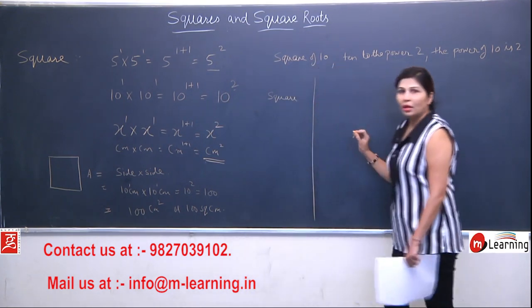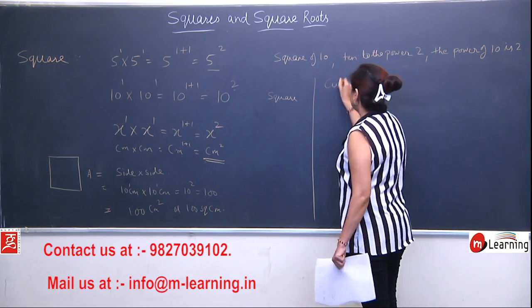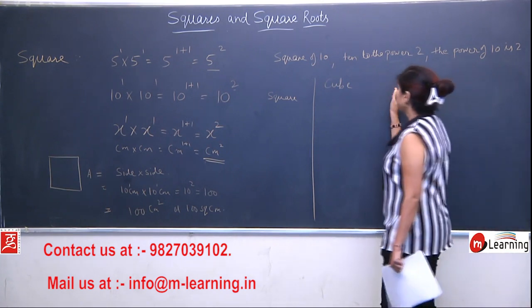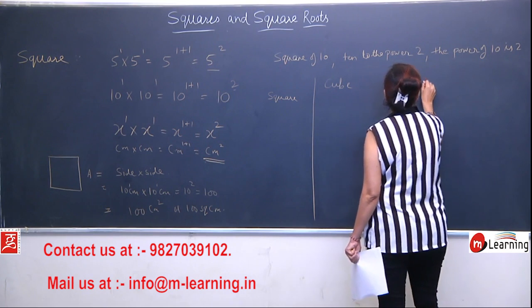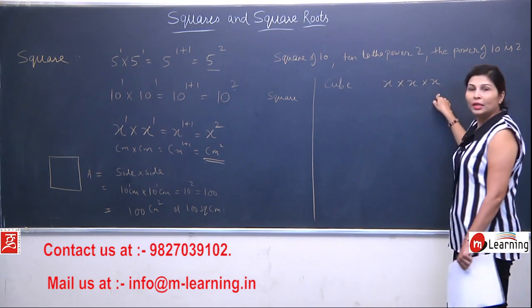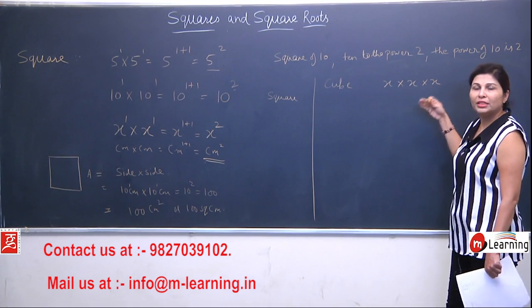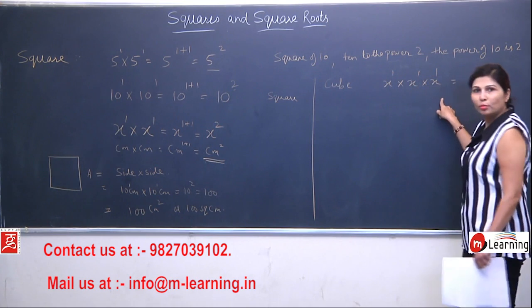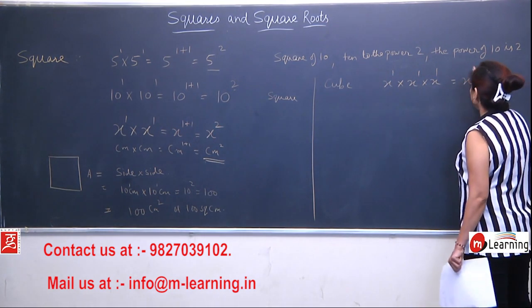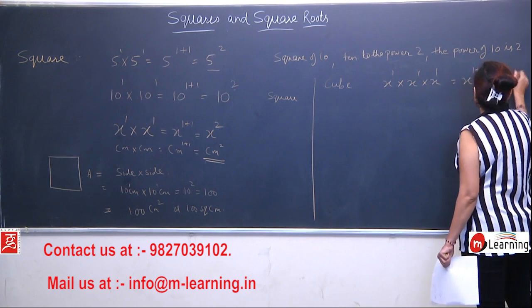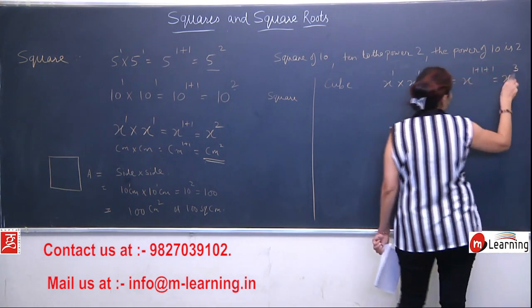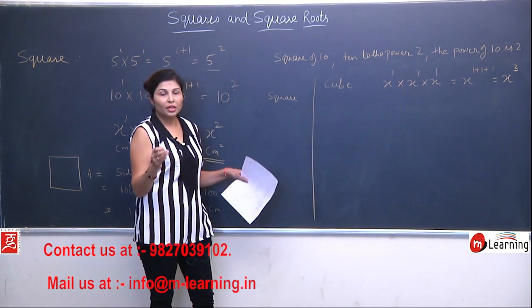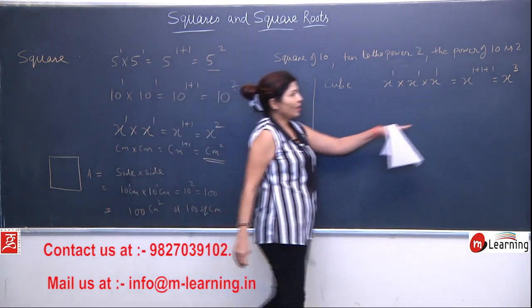Similarly, in maths there is another word: cube. You don't need it right now, but you should know it. Cube means when a number is multiplied three times by itself. Any number — if that number is multiplying three times — each has power 1, and from the power rule, powers will be added. 1 plus 1 plus 1 means x to the power 3. You can say 'the power of x is 3', but now the word we use for power 3 is 'cube'. This is x cube.